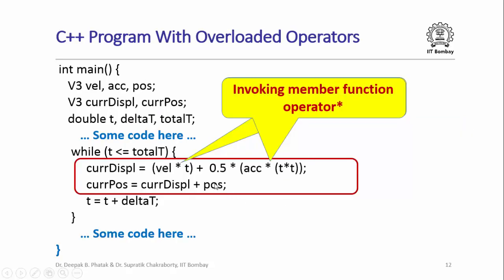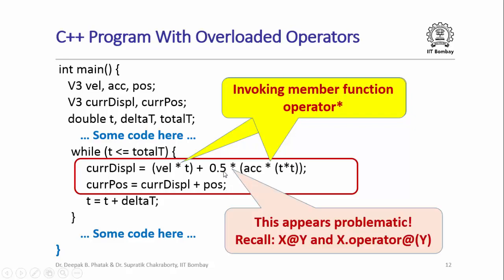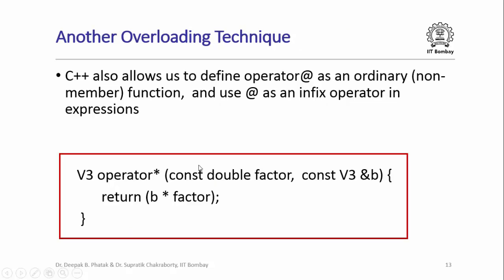Looking back at the motion simulator code, the two star operators for velocity and acceleration are handled by the member function operator*. But what about the expression 0.5 * something? To interpret that I would need to apply 0.5 dot operator*, but 0.5 is not a receiver object of class V3 — that does not make sense. C++ provides another overloading technique to solve this problem: for every member function operator@ defined within a class, C++ also allows you to define operator@ as a non-member function.